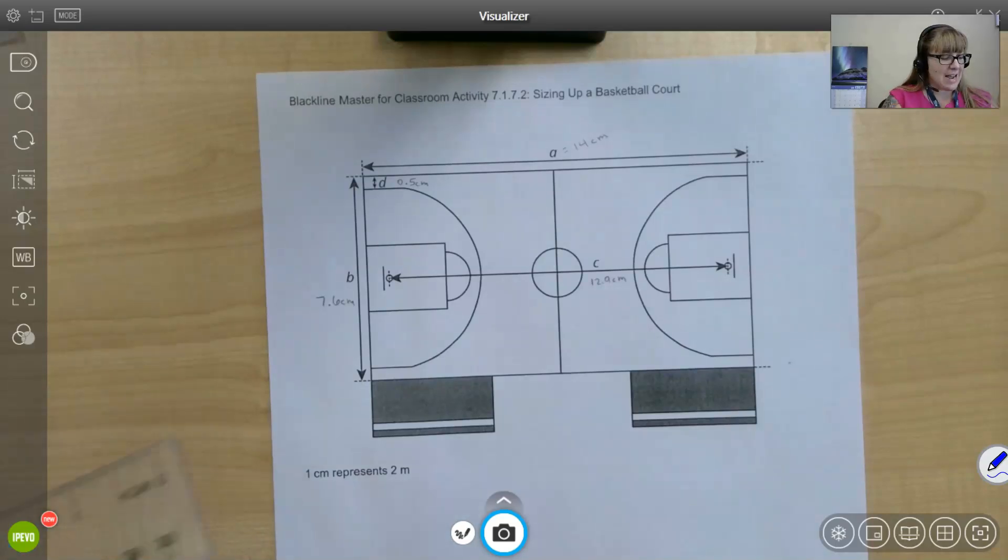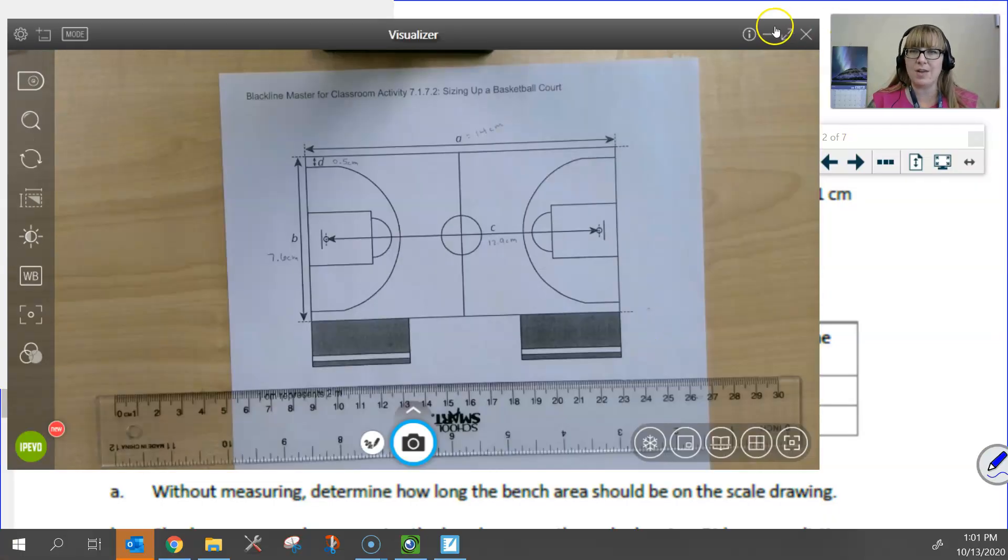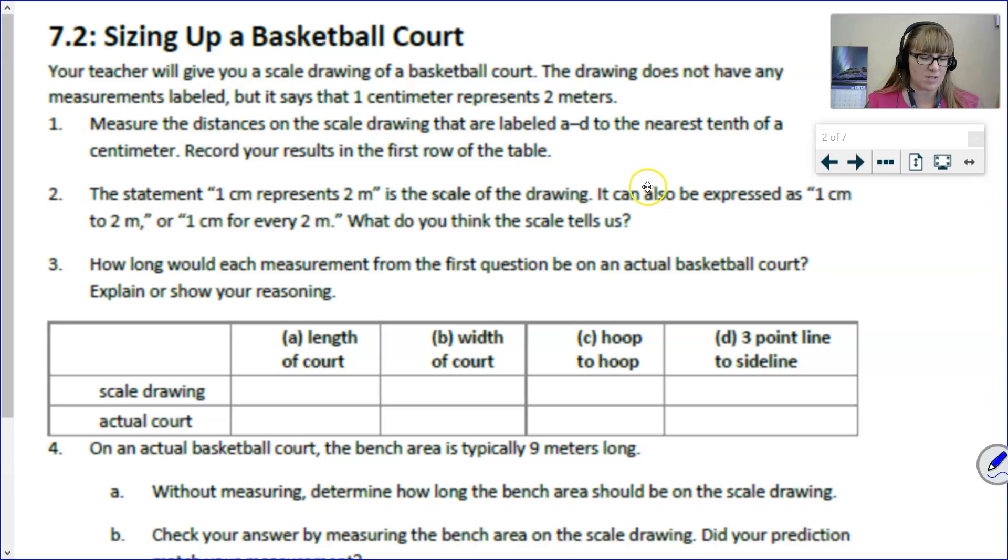So now that I have done that exercise and actually measured with the actual ruler, now I'm ready to go back and put that information on the screen. That's pretty much the only thing that was hard for you online learners to do. So I hope that you will accept my measurements that I did. We had length A was 14 centimeters. B, the width of the court was 7.6 centimeters on our scale drawing. C was 12.9 centimeters. And length D was 0.5 centimeters.